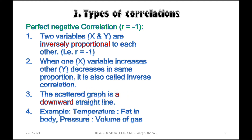An example is temperature and fat content in the body — they are inversely proportional to each other. An increase in temperature decreases the fat content in the cell. Another example is pressure and volume of gas: an increase in pressure decreases the volume of gas. These are examples of negative correlation.